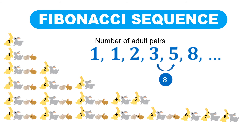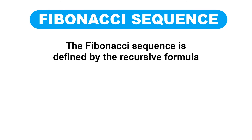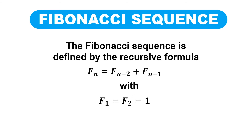We can now predict the succeeding terms. The seventh term is five plus eight, which is equal to 13. And the eighth term is eight plus 13, which is equal to 21. The Fibonacci sequence is defined by the recursive formula: F sub n is equal to F sub (n minus 2) plus F sub (n minus 1), with F sub 1 equal to F sub 2, which is equal to 1.